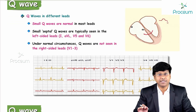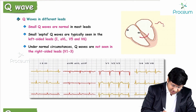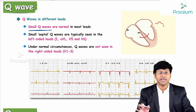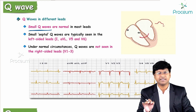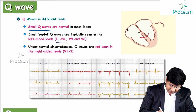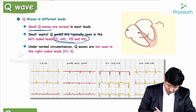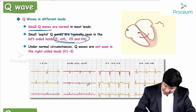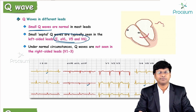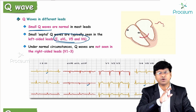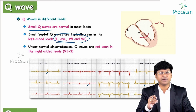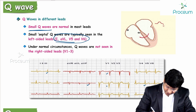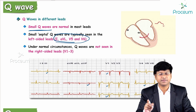In a normal ECG, the Q wave is very small. Small septal Q waves are typically seen in the left-sided leads — that is lead I, AVL, V5, and V6, which are your lateral leads. Under normal circumstances, you will not have Q waves from V1 to V3, the right-sided leads.